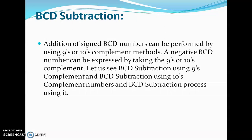There are two types of complements for each base-r system: the radix complement and the diminished radix complement. The first is referred to as the r's complement and the second as the (r-1)'s complement. For a number in base 10, the radix complement will be the 10's complement and the diminished radix complement will be the 9's complement. A negative BCD number can be expressed by taking the 9's or 10's complement.